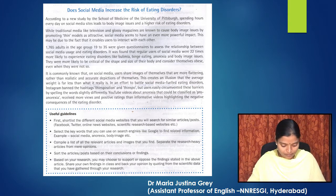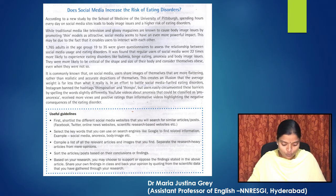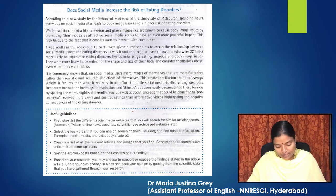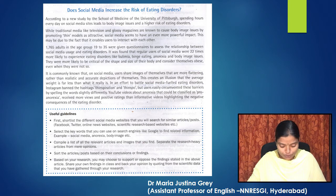Let's look at some useful guidelines. First, shortlist the different social media websites that you will search for similar articles or posts — Facebook, Twitter, online news websites, scientific research-based websites, etc. Select the keywords that you can use on search engines like Google to find related information, for example: social media, anorexia, body image, etc. Compile a list of all the relevant articles and images that you find. Separate the research-heavy articles from mere opinions. Sort the articles or posts based on their conclusions or findings. Based on your research, you may choose to support or oppose the findings stated in the above article. Share your own findings in class and back your opinion by quoting from the scientific data that you have gathered through your research.